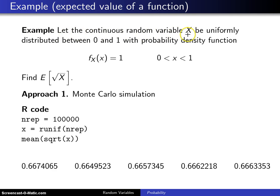Let the continuous random variable X be uniformly distributed between 0 and 1 with probability density function f_X(x) equals 1, 0 is less than x is less than 1. This is what in the past we've called the uniform(0,1) distribution.